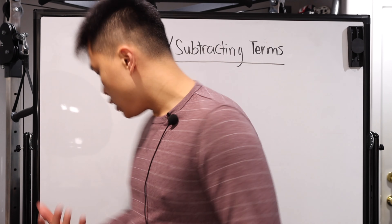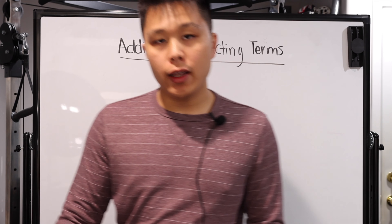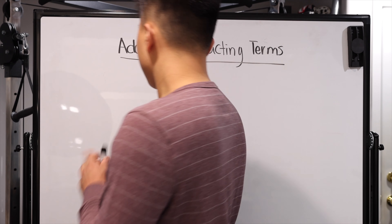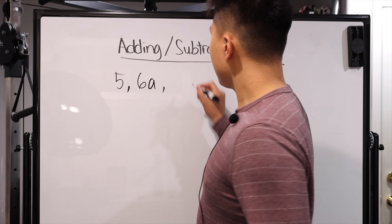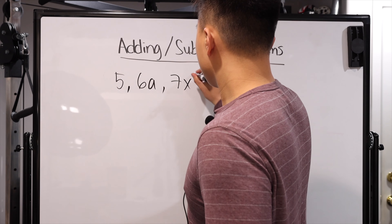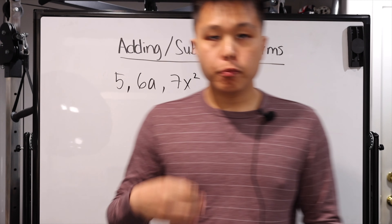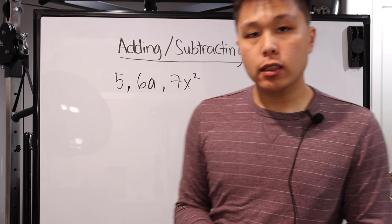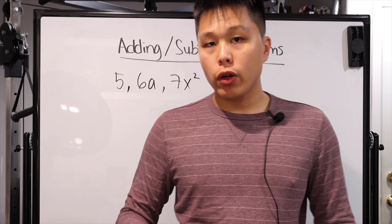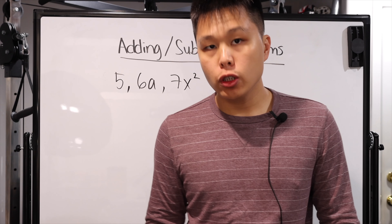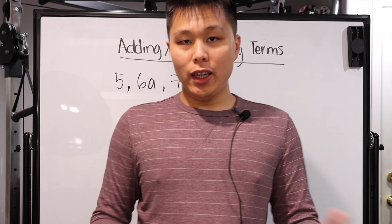Remember, terms are either numbers or a combination of numbers and letters, basically numbers and variables. So 5 is a term, 6a is a term, 7x squared is still a term. The importance of adding and subtracting terms is mainly used for problems where they ask you to simplify an expression or combine like terms, which we're going to explain in a little more detail in a bit.